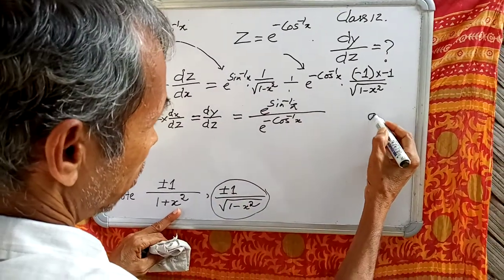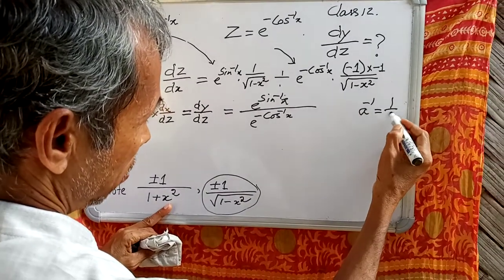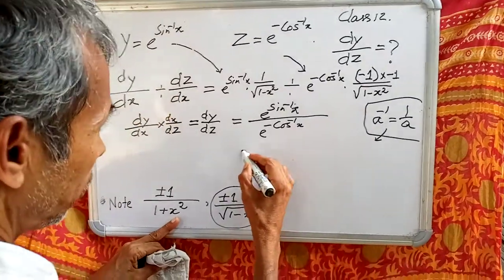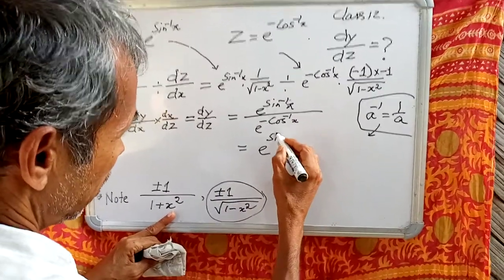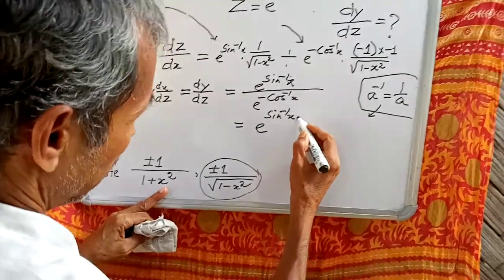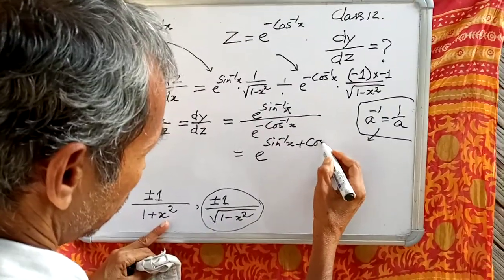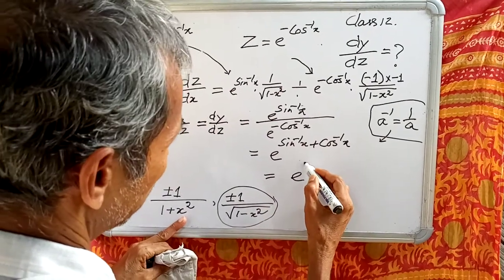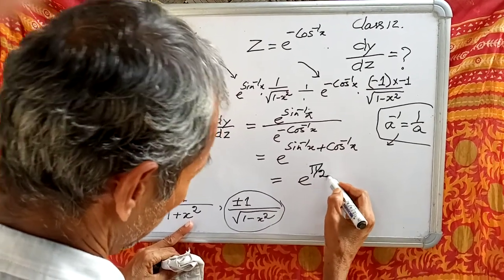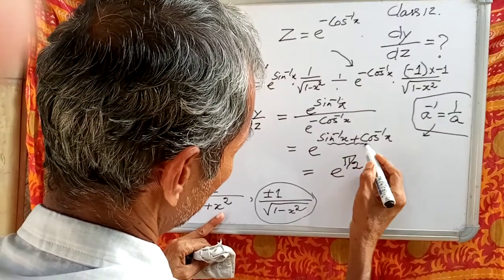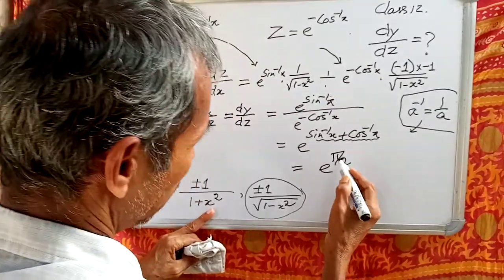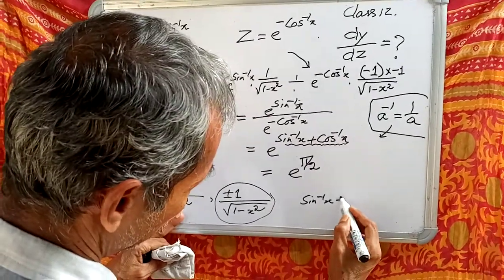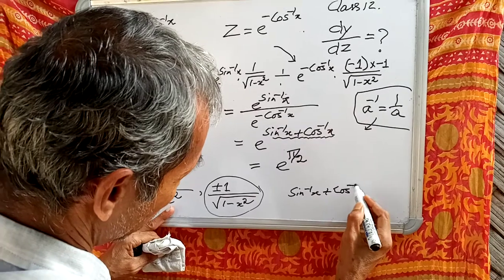Since a to the power minus 1 equals 1 by a, we can write e to the power sin inverse x divided by e to the power minus cos inverse x as e to the power sin inverse x plus cos inverse x, which equals e to the power pi by 2, because sin inverse x plus cos inverse x equals pi by 2.